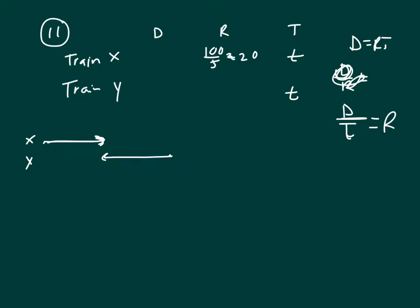Train Y's rate is 100 over 3. Of course distance equals rate times time, so this guy's distance is 20T and train Y's distance is 100 over 3 T.